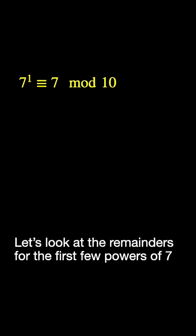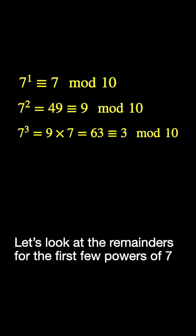Let's look at the remainders for the first few powers of 7. 7 to the 1st is 7 mod 10. 7 squared is 49, but that's congruent to 9 mod 10, meaning when you divide it by 10, you'll get a remainder of 9. For 7 cubed, we need only take the remainder from the previous step and multiply it by 7. 9 times 7 is 63, and that's congruent to 3 mod 10.